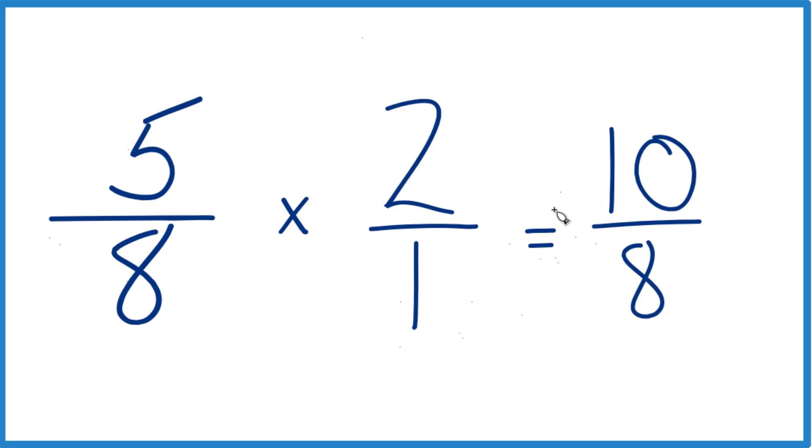So 5 eighths times 2, that's 10 eighths. This is an improper fraction because the numerator is larger than the denominator. So let's simplify it first because it's even numbers. They're both even.